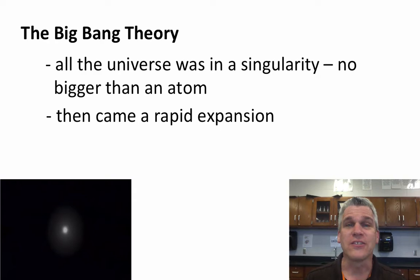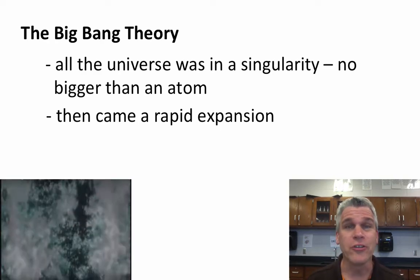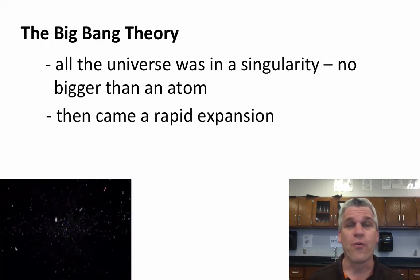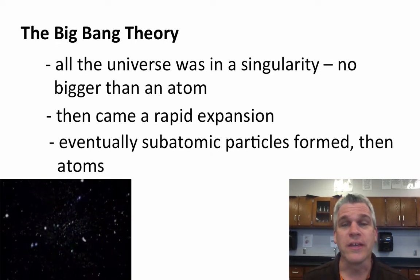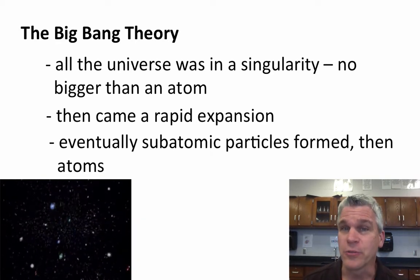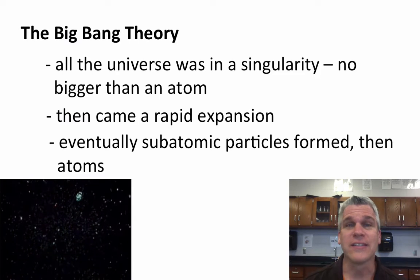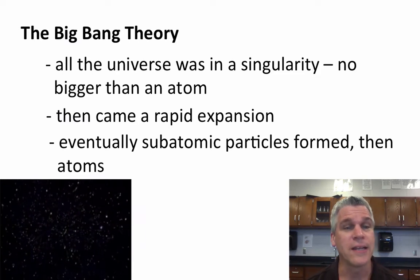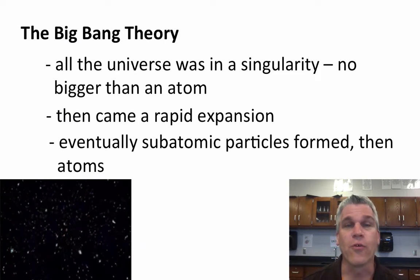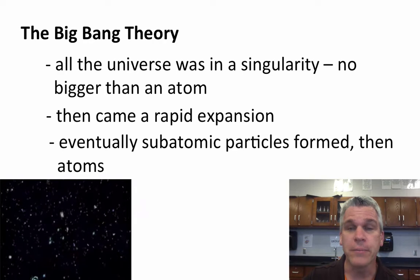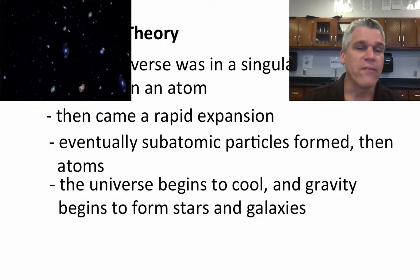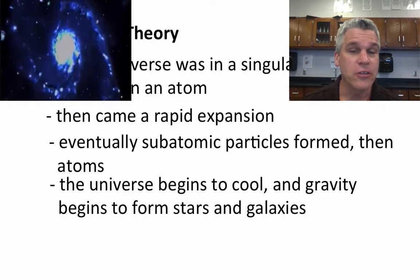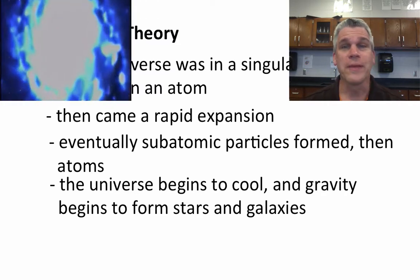And then there was this rapid expansion. This mass was hurled in all different directions, forming the universe. Eventually, the subatomic particles had formed — things like protons and neutrons and electrons. They eventually formed into atoms, and the universe eventually began to cool. Gravity starts making stars and forming galaxies.